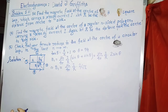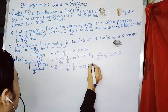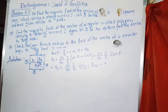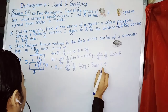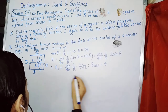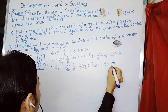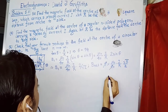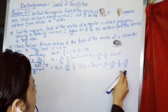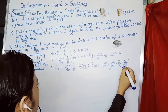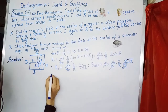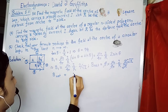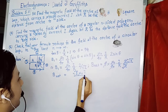This is the field produced due to one side of the square loop. Since it is a square, the net magnetic field at the center, B_net, will be 4 times the field produced by one side: B_net = 4 × μ₀/4π · I/R · √2/2. After cancellation, the net magnetic field at the center becomes B_net = √2 μ₀ I / (π R).